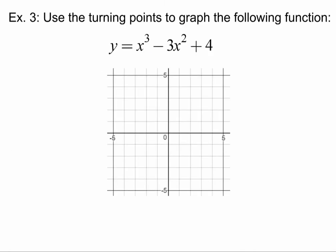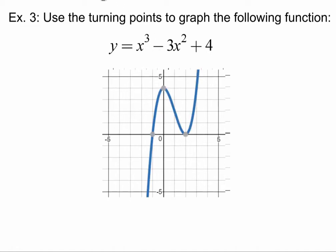We're going to use turning points to graph a function. Using a graphing calculator, I can find turning points for this function at (0, 4) and (2, 0). It also has a zero at (−1, 0). Once I know those points, I can draw in my graph.